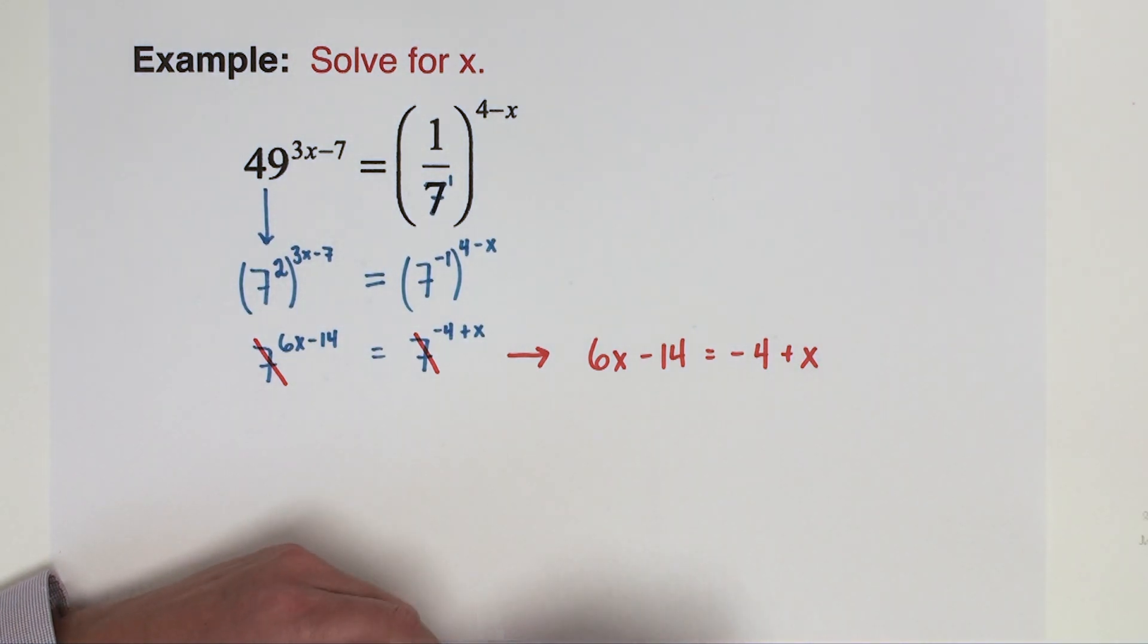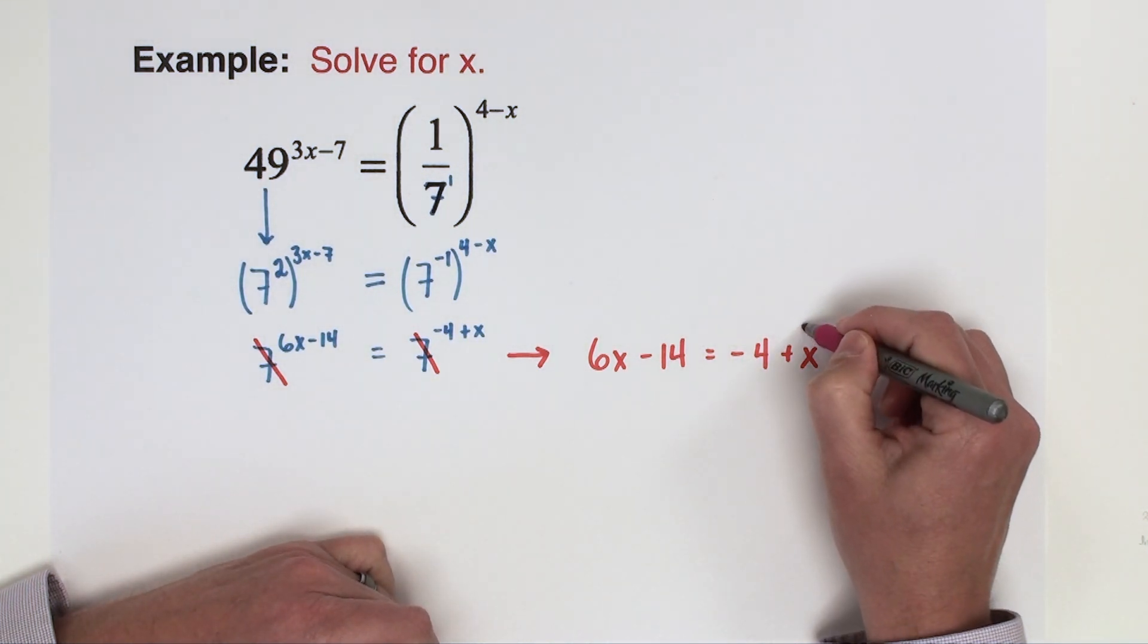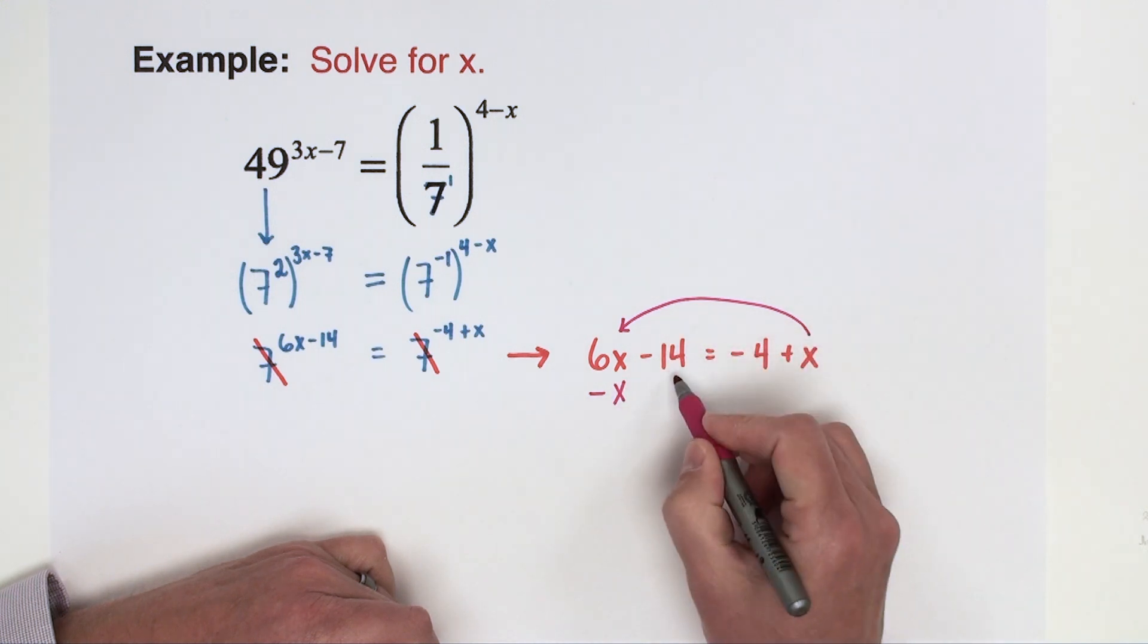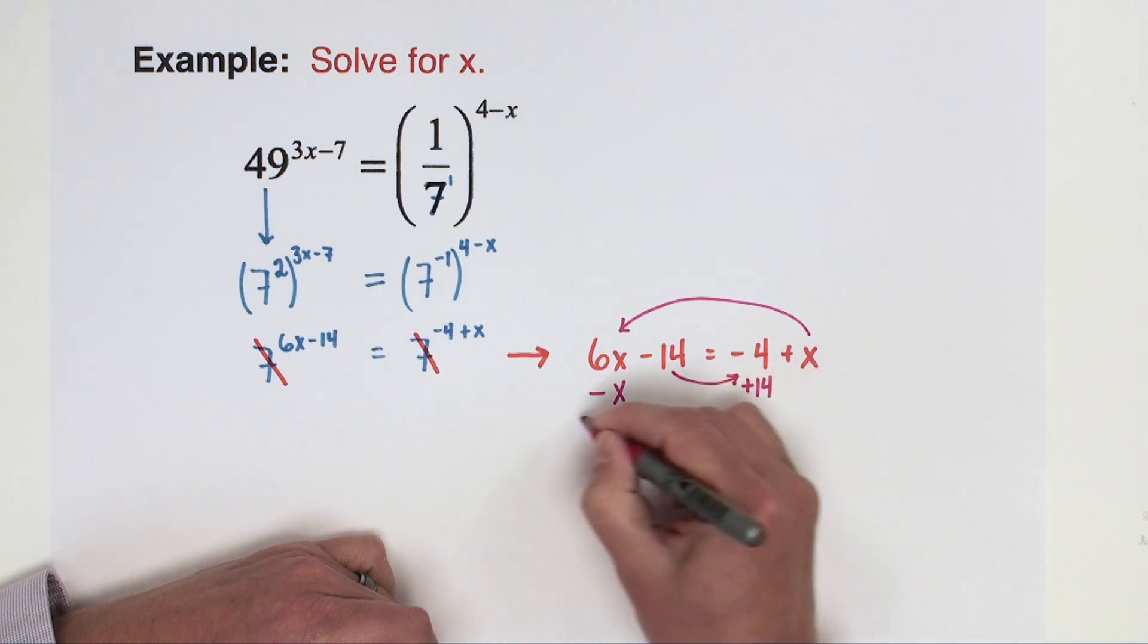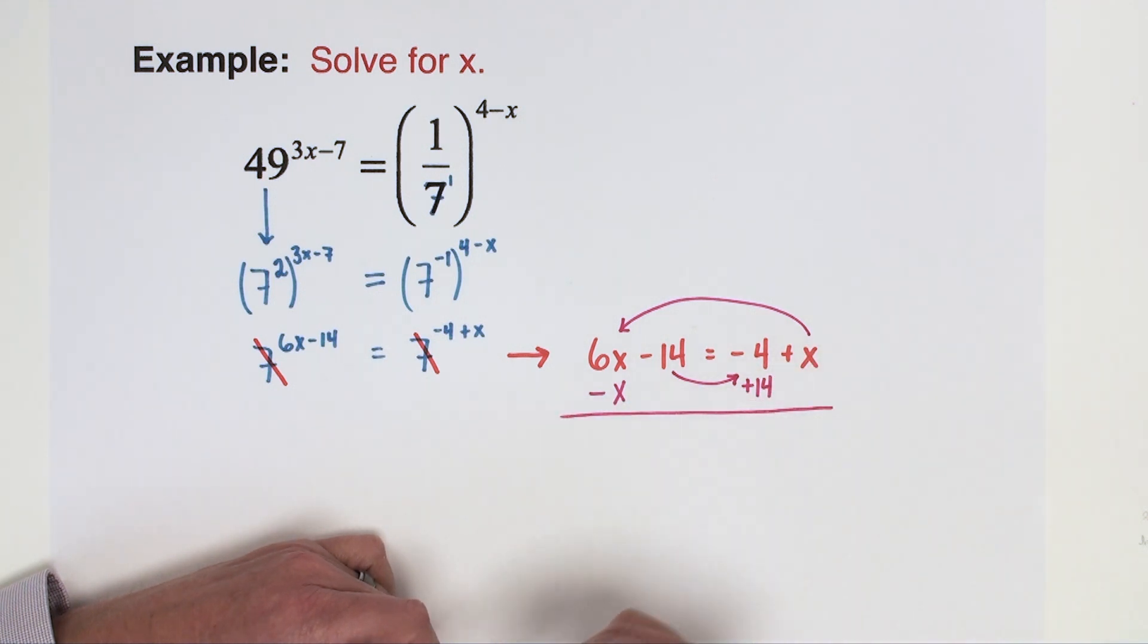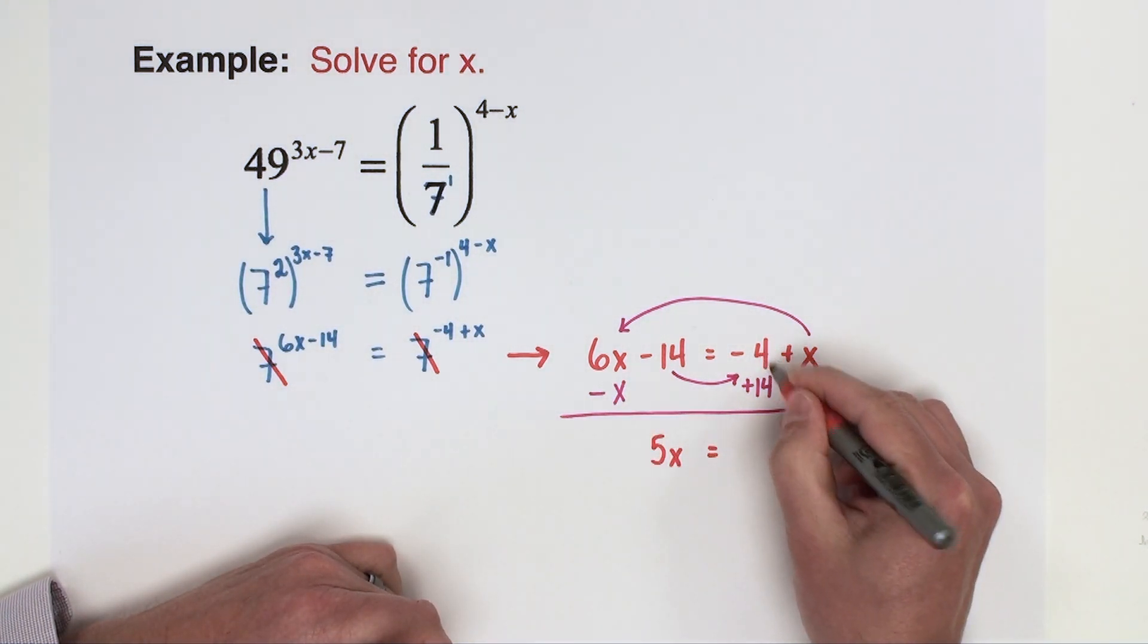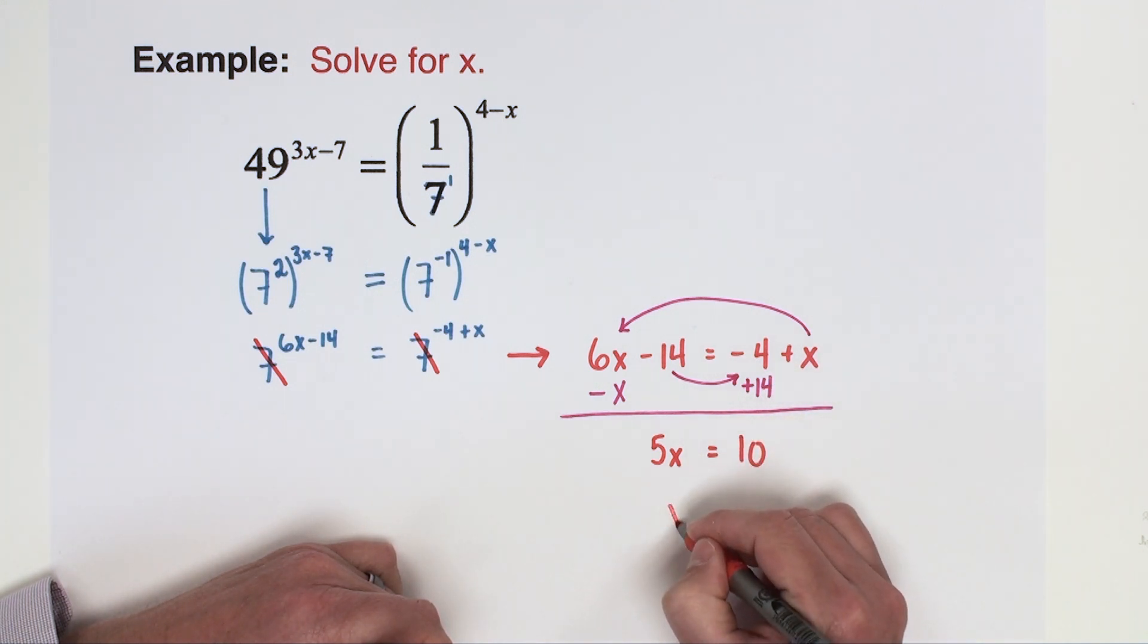I'm going to bring my x's to the left-hand side, so this positive x over to the left-hand side by subtracting. This minus 14 is going to go over to the right-hand side by adding. So that's going to give us now 6x minus 1x is 5x equals negative 4 plus 14 is 10. Divide both sides by 5 and we get x equals 2.